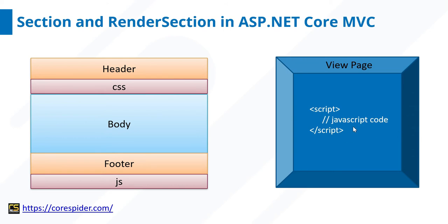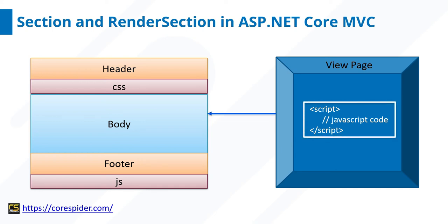Suppose there is another view page — a custom page — that has some JavaScript code, and we don't want this JavaScript code to conflict with other pages. That means this JavaScript code should run only for this custom page. Whenever this custom page is rendered in the body, this particular script will run only in that part.